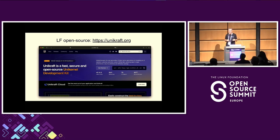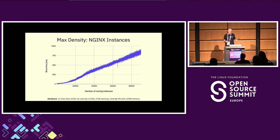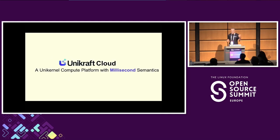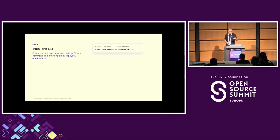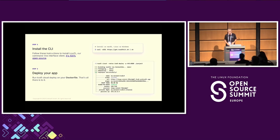This is a lightning talk, so I won't dive too deep. What we use is called Unicraft, which is an open source Linux Foundation project at unicraft.org that we started five or six years ago. Its aim is to make it simple to build these unikernels. As a taste: on a single server in a stress test, you can run about 90,000 Nginx virtual machines. Unicraft Cloud is a cloud platform we built based on these unikernels, and the key point of the platform is that it runs with millisecond semantics. You install a one-liner craft CLI open source tool, run it, and it's based on Docker files.